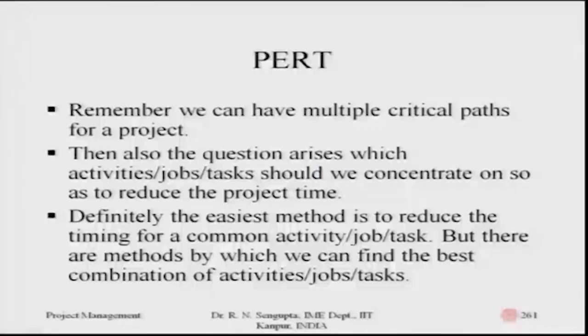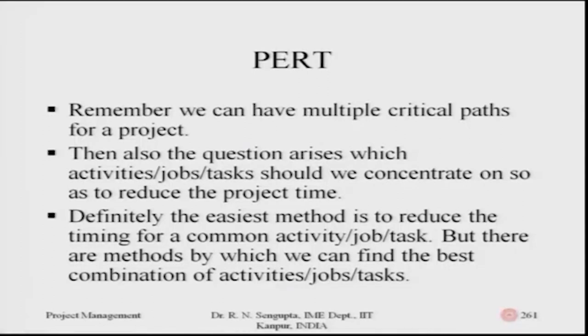It may happen that there are two critical paths but we concentrate on only one, because the overall saving from crashing is higher on one path than the other. The easiest method is to reduce timing for activities common to both critical paths. If no common activity exists, you must choose a path — for example, reducing job A on critical path one may require reducing jobs D and E on critical path two to achieve the same cost reduction.